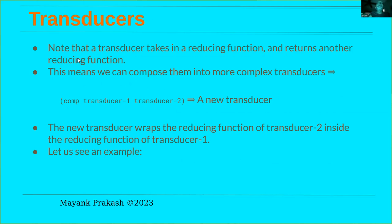Since the transducer takes a reducing function and returns another reducing function, we can compose transducers — take the output of one transducer and pass it as input to another to get a new transducer. We can build a sequence of these things, compose them together, and get a new transducer, which can then be used to create a reducing function to pass to reduce. That allows us to compose reducing functions, as we'll see in a moment.